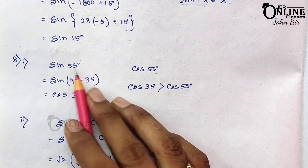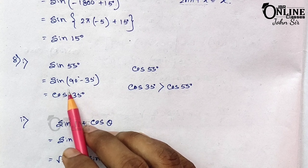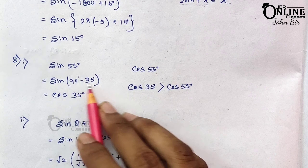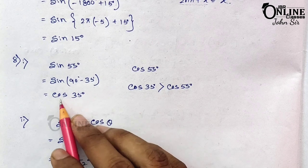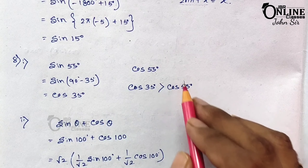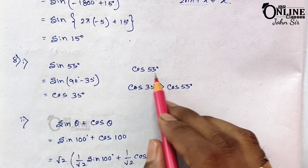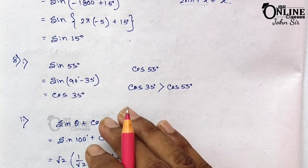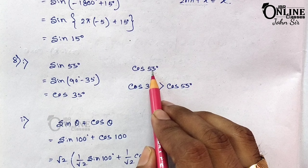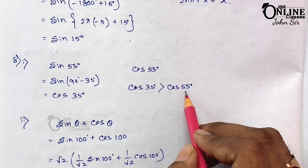Problem 8.1: Which is bigger, sin55° or cos55°? Convert sin55° using the formula: sin55° = sin(90°−35°) = cos35°. Now compare cos35° and cos55°. Since cos decreases as the angle increases (cos0° = 1, cos90° = 0), 35° is a smaller angle so cos35° > cos55°. Therefore sin55° > cos55°.